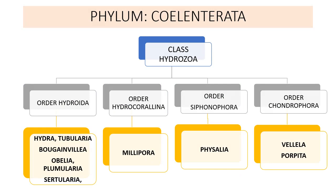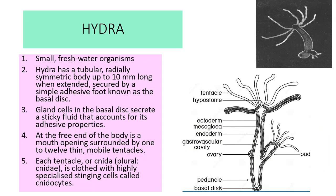Class Hydrozoa is divided into different orders. The first order is Hydroida, with examples Hydra, Tubularia, Bougainvillea, Obelia, Plumularia, and Sertularia. The second order is Hydrocoralina, where Millipora is present. The third order is Siphonophora, where Physalia is present. The fourth order is Chondrophora, where Velella and Porpita are found. We will now take these up one by one.